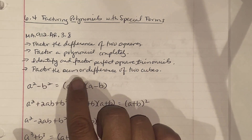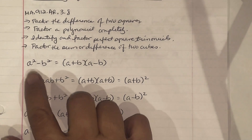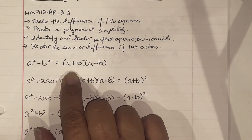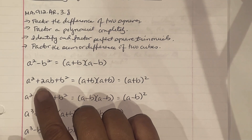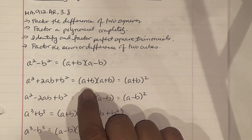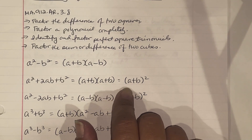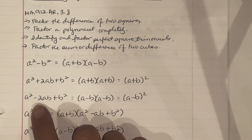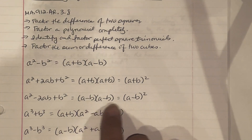Some formulas you need to remember: if you see a squared minus b squared, that breaks down to a plus b times a minus b. If you see a squared plus 2ab plus b squared, that's a plus b times a plus b, also known as a plus b quantity squared. If you see a squared minus 2ab plus b squared, that breaks down to a minus b times a minus b, or a minus b quantity squared.